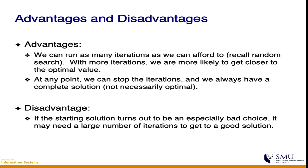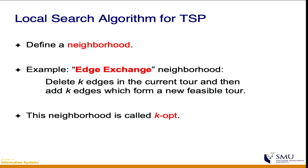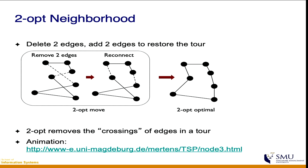Now what do we actually mean by doing local search? We're going to define a term called neighborhood. The idea of neighborhood is the set of alternate solutions — you start from a starting solution and then define the neighborhood, which are the alternatives you would like to examine. One way to define the neighborhood is through what we call edge exchange, using a specific algorithm called k-opt.